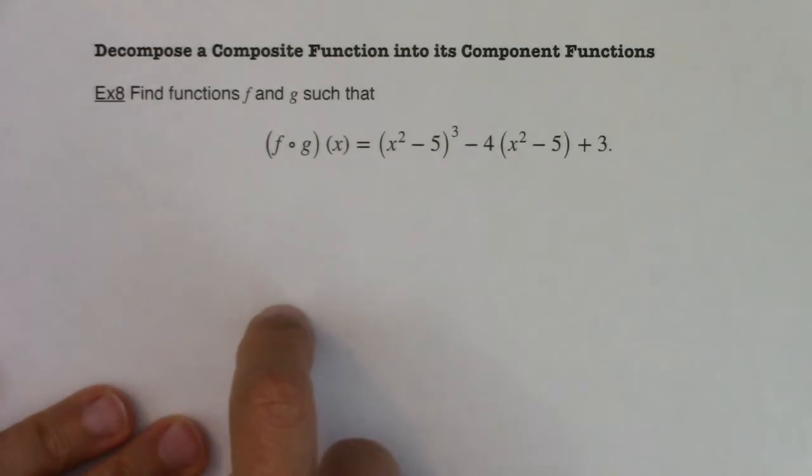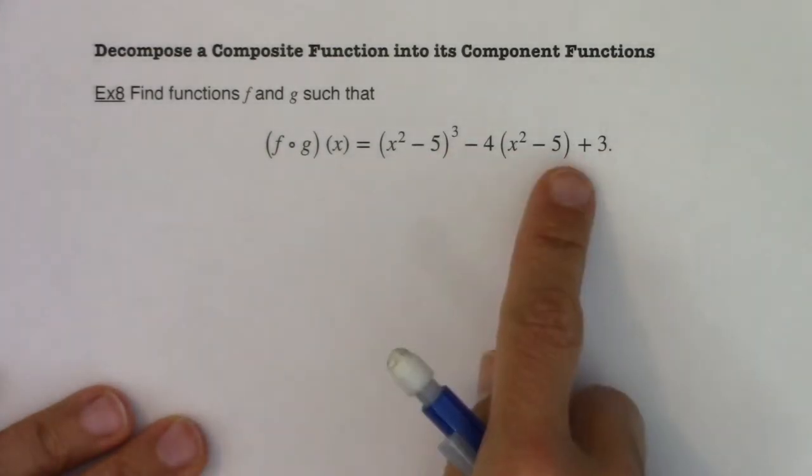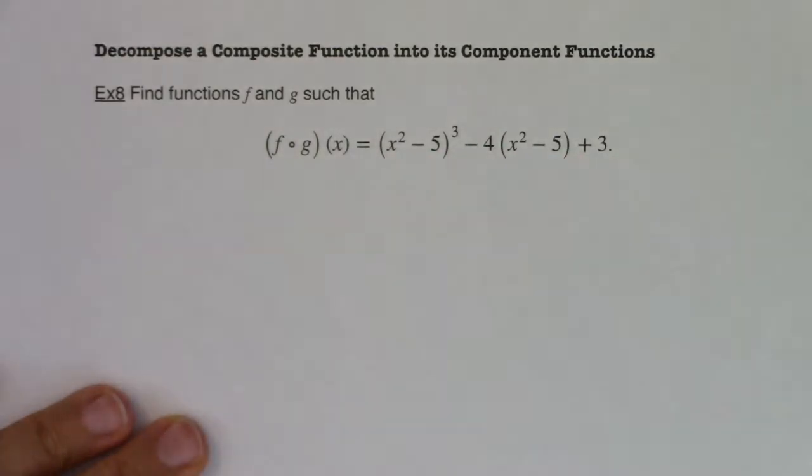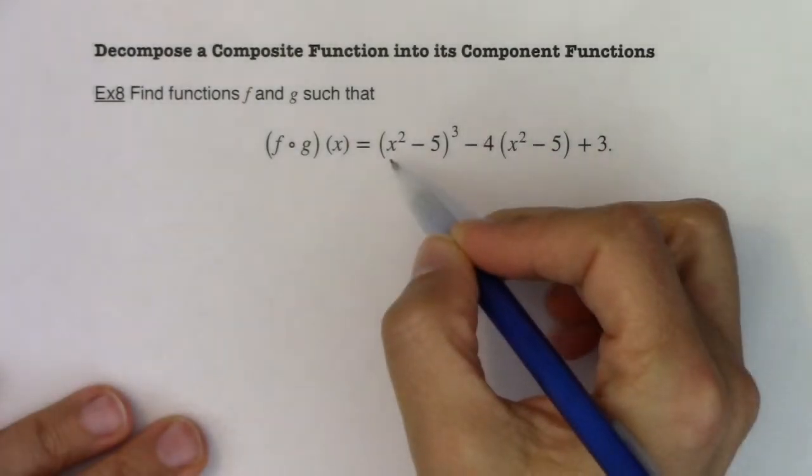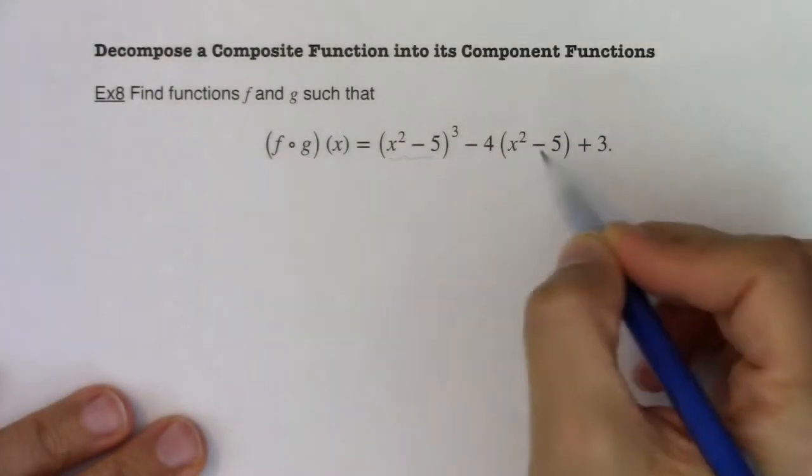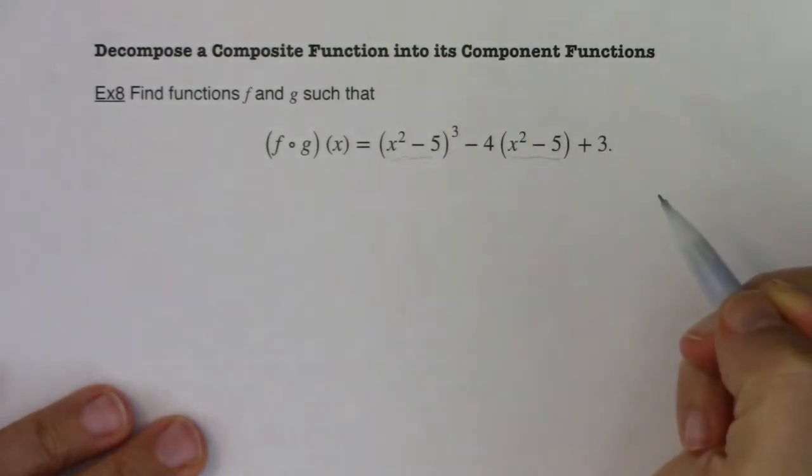So what were f and g initially? Like how did I wind up with f of g of x? Things to take note of - if we look at f of g of x, you see the x squared minus 5 here and the x squared minus 5 here.